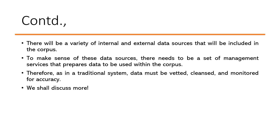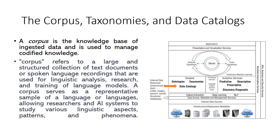This is very, very important. As in traditional systems, the data must go through stages that will enable it to be vetted, cleansed, and monitored for accuracy. Before we go to the next step, we need to understand what is a corpus, taxonomies, and data catalogs — these terms are very important.